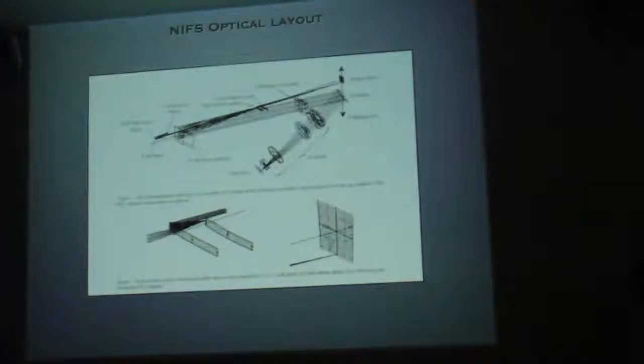This is the optical layout. The only thing you really want to point out here is there's the field mirror, the pupil mirror. These are what are used to rearrange the slices. So these are the image slicer here, these are used to rearrange the slices, and then pass it through the spectrograph.